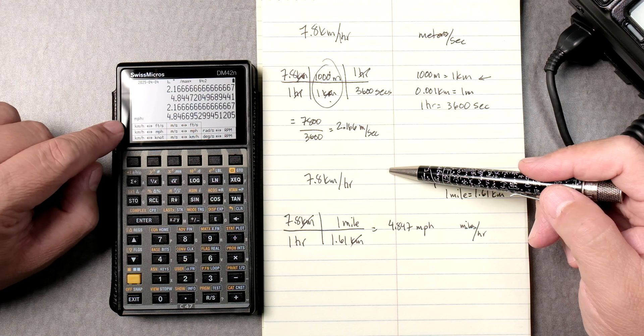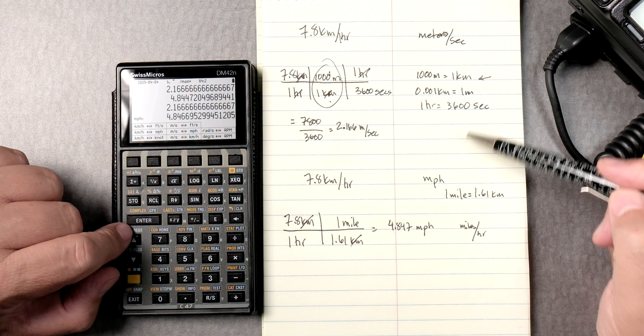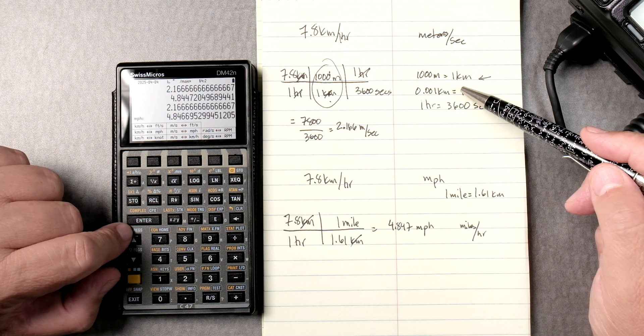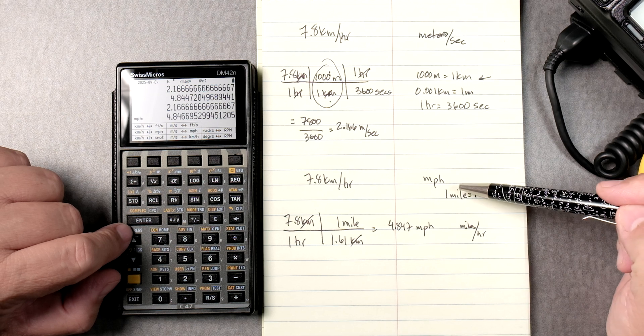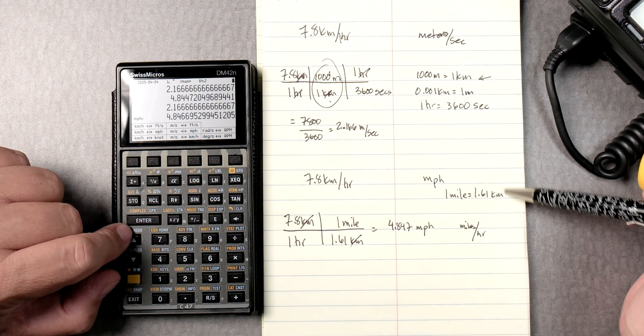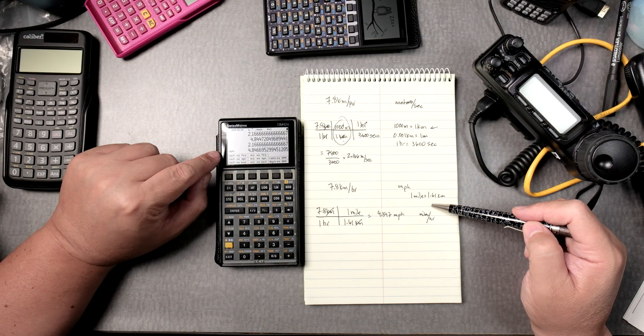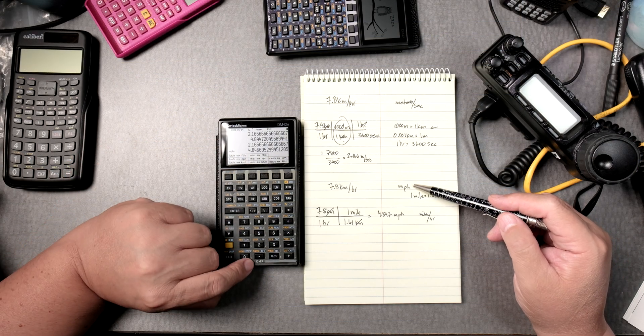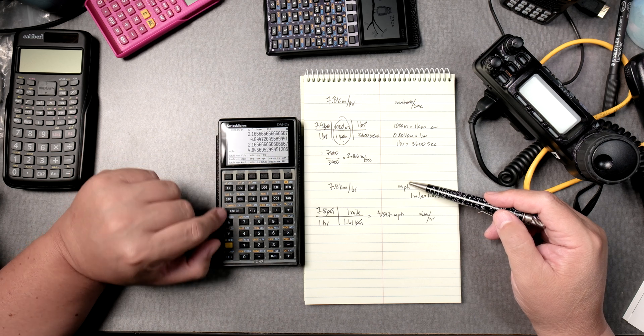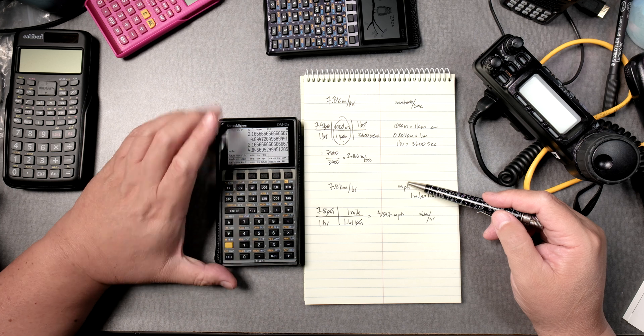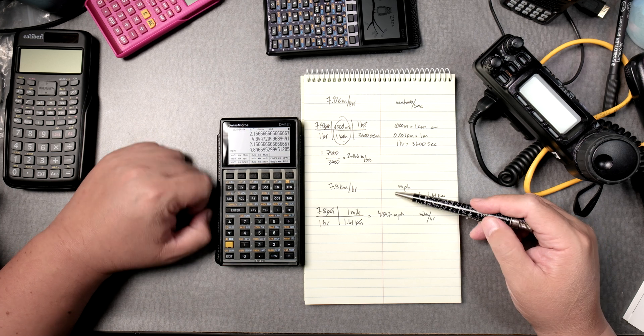Accuracy of this calculator is awesome. Accuracy of these answers might not be super great. This one in terms of the conversion between miles and kilometers might be more accurate with more numbers on this. So, you have an idea now on the C47 on the Swiss Micros DM42N and some of its conversions doing dimensional analysis on it.